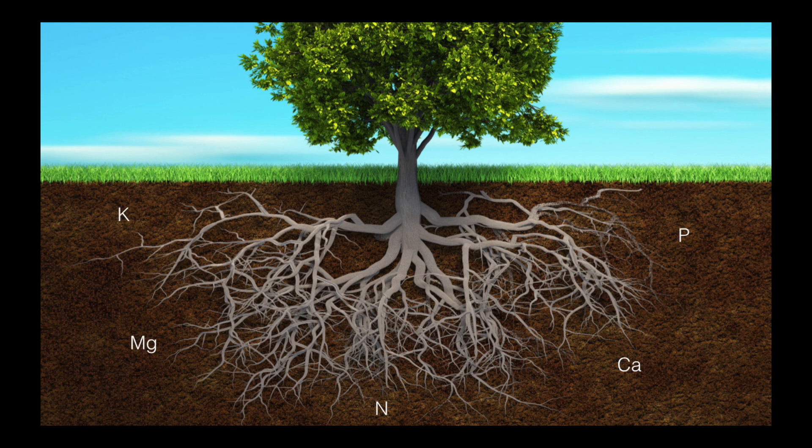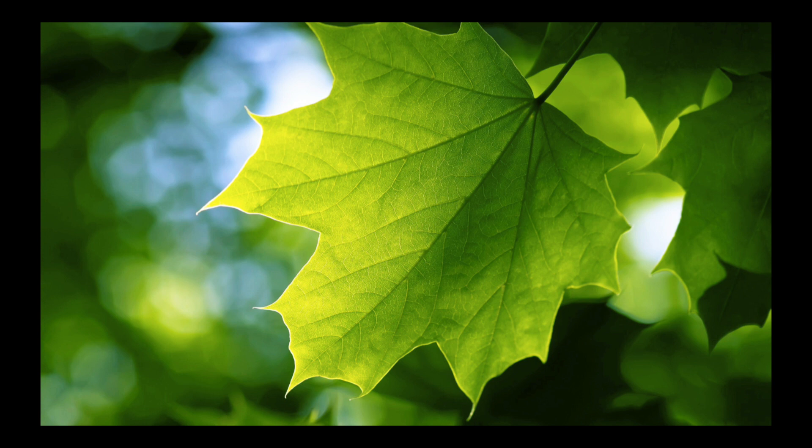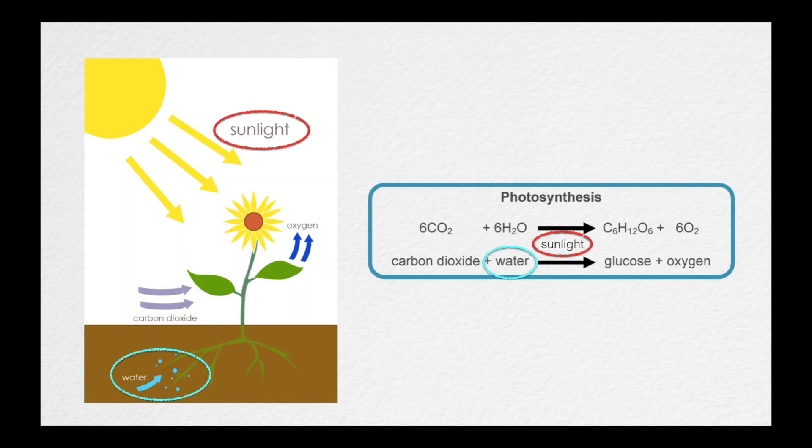In a process known as photosynthesis, the plant takes carbon dioxide from the air and emits oxygen, all with the help of sunlight and water, of course. Now look closely as CO2, or carbon dioxide, goes in and O2, or oxygen, comes out.